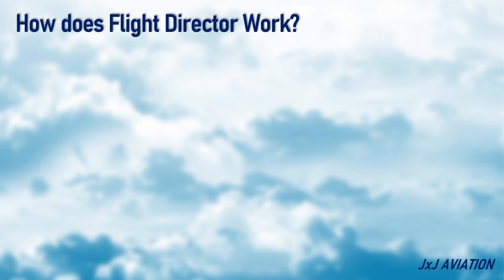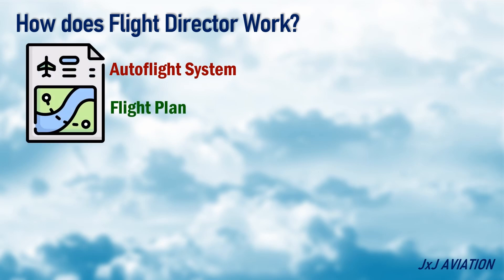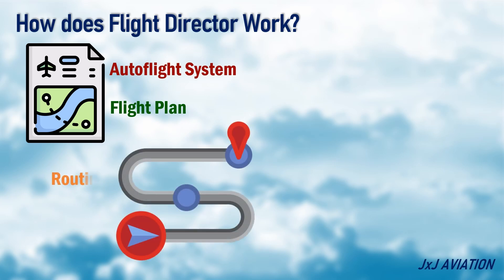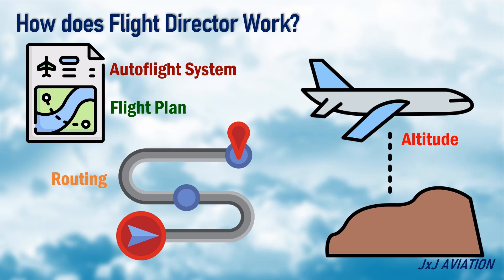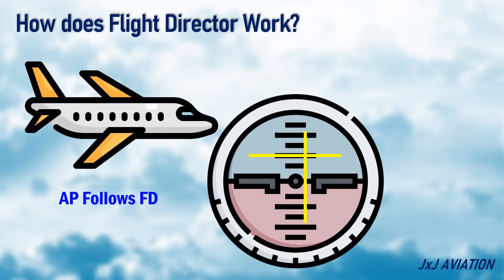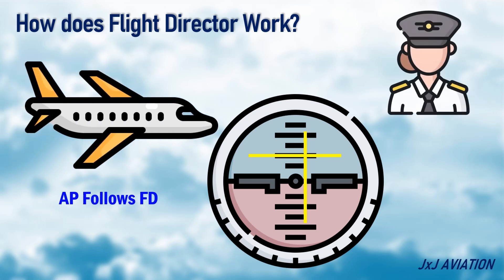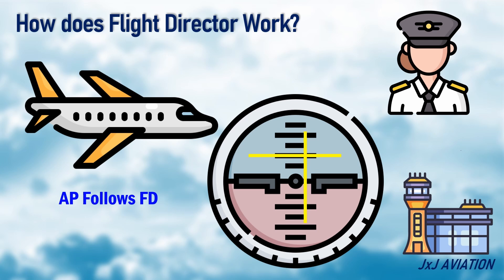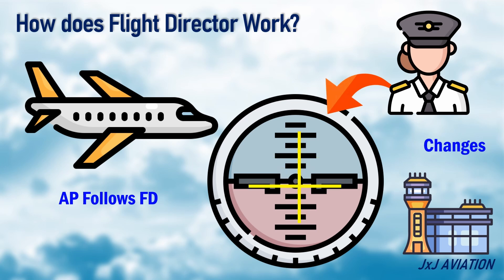The flight director works along with the autoflight system. The autoflight system holds the flight plan for a particular flight. The flight plan holds different information, such as the routing and the altitude at which the aircraft should be flown at. Based on this information, the flight director starts providing commands for pitch and bank. With the autopilot on, the autopilot will follow the flight director commands. If the autopilot is off, the pilot has to follow the FD commands. The pilot may deviate from the flight plan because of ATC instructions. The changes made by the pilot will have higher priority, and the flight director will provide commands as per these changes.